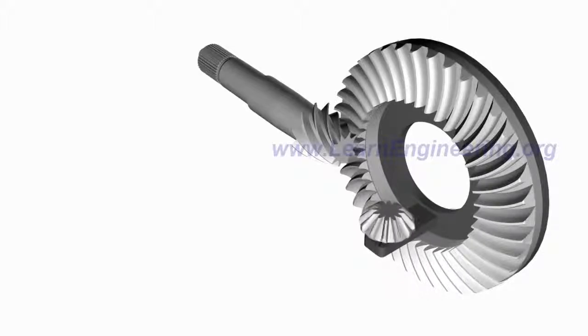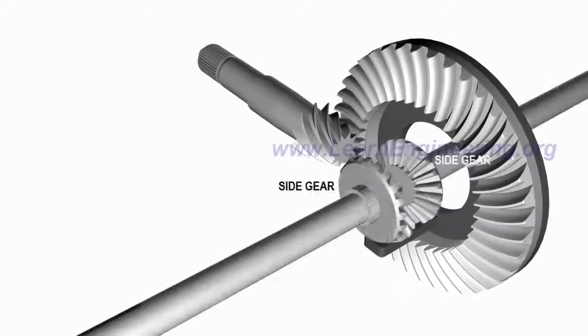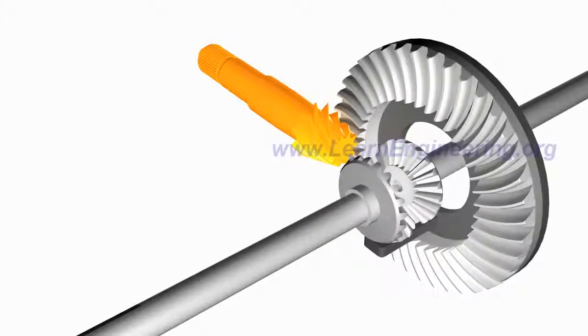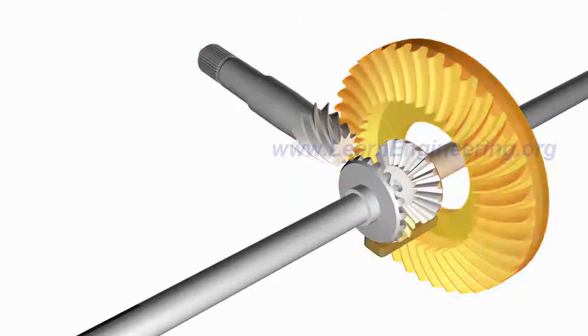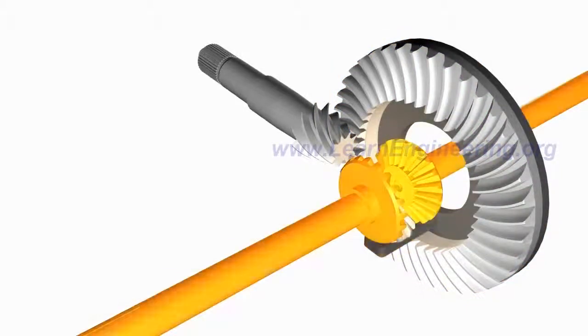Spider gear is meshed with two side gears. So, power from the engine flows from the pinion to the left and right wheels as shown. Now, let's consider different cases.